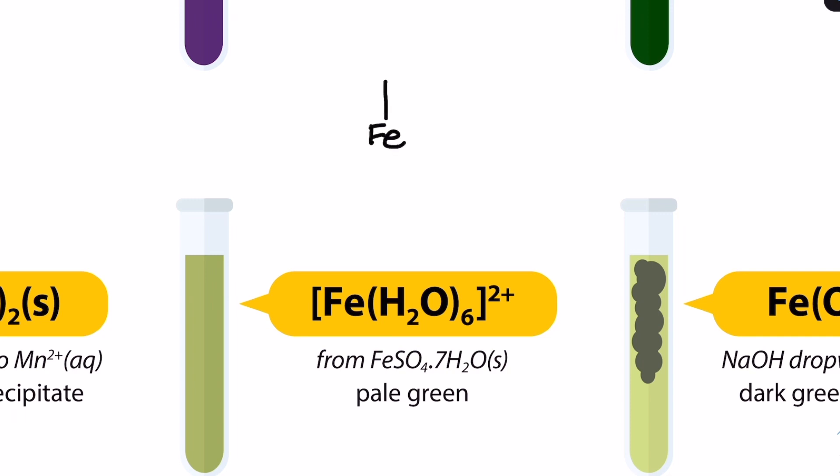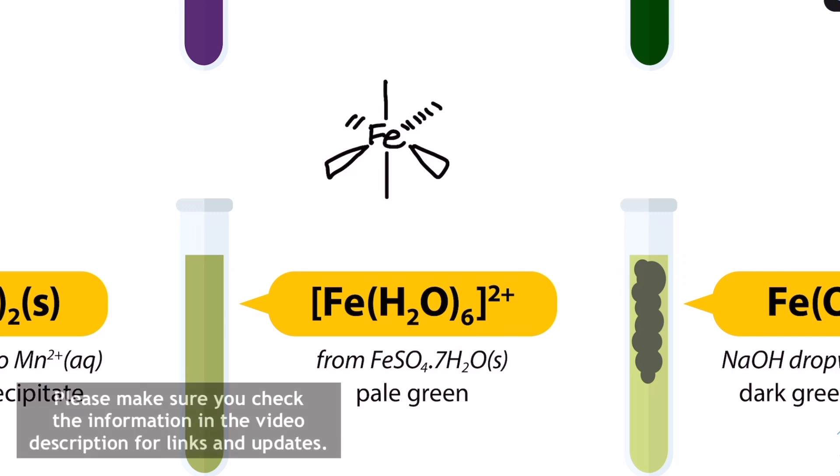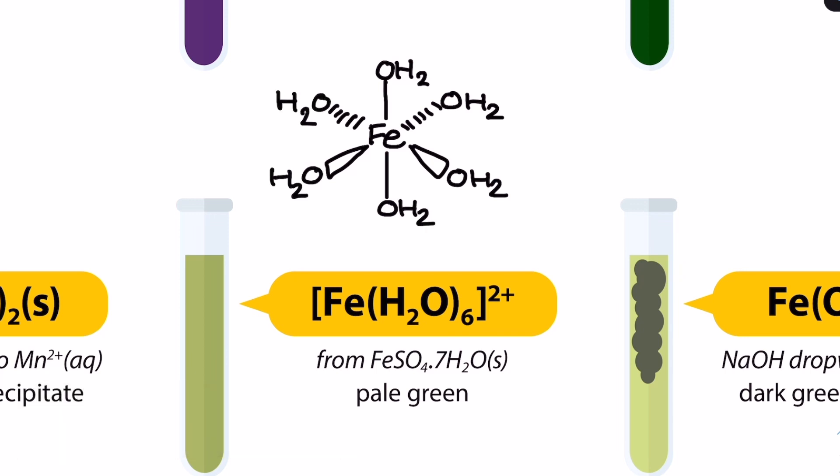First up we have the pale green hexa aqua iron II complex ion. We draw this in the octahedral three-dimensional shape with the water molecules acting as ligands and forming dative covalent bonds to the iron II ion in the centre.